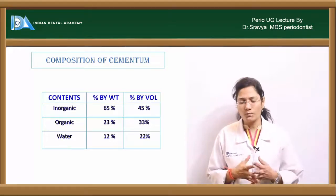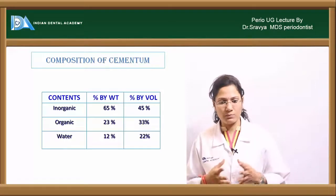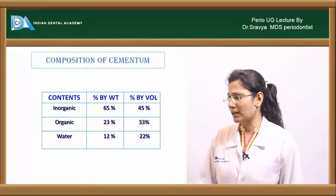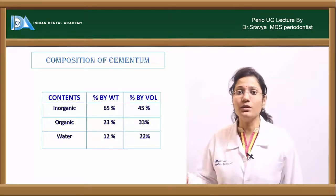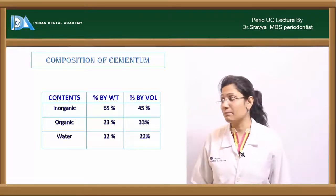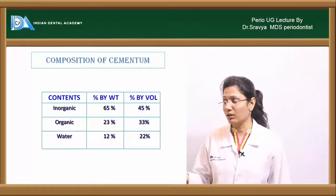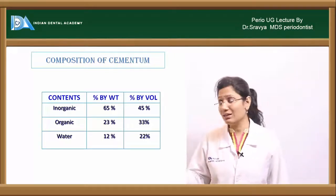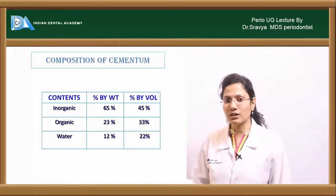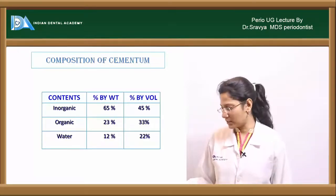Cementum is composed of an organic matrix, an inorganic component, and water. About 65% by weight is inorganic, organic is about 23%, and the remaining approximately 12% is water.